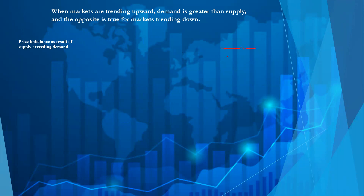We have a consolidation here, and the reason why we have this consolidation is that the quantity of buy orders at this range is equal to the quantity of sell orders — buyers buy and sellers sell. The only reason why price will move out of this and trend upward is when demand or buyers become more than sellers. And the only reason why price will move out of this consolidation to the downside is when sellers become more than buyers.